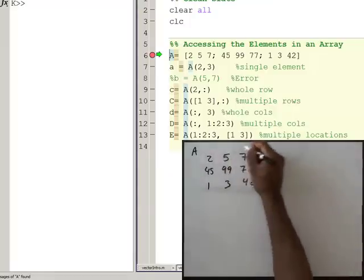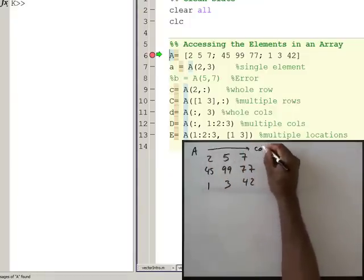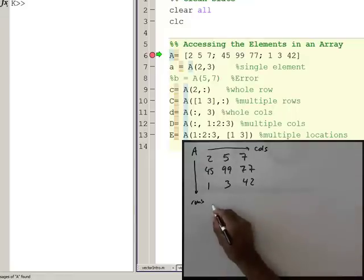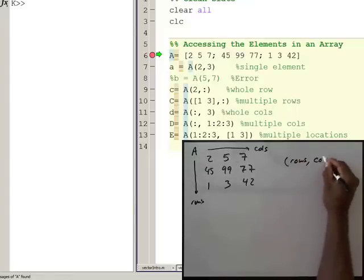Now to access something, keep in mind, across the top here we have the columns, and down this way we have rows. Remember when we access an array, it's always rows, comma, columns.